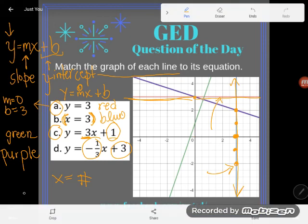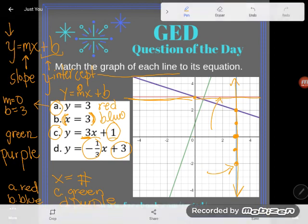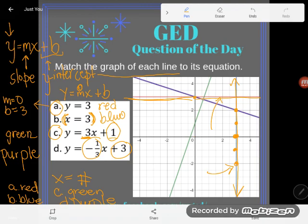Okay, let's just sum up what we did. So A is the red line, B is the blue line, C is the green line, and D is the purple line. All right, if you have any questions about this or any other GED math concept, be sure to drop it in the comments and I'll do my best to answer it.